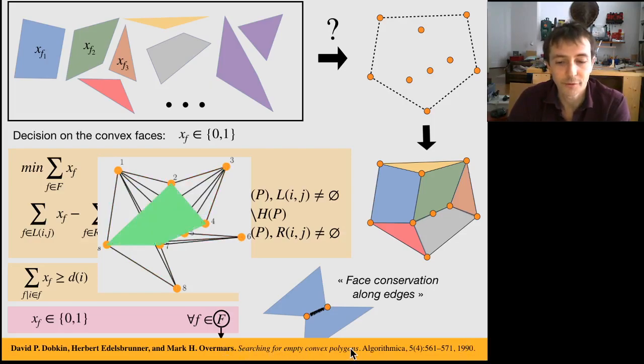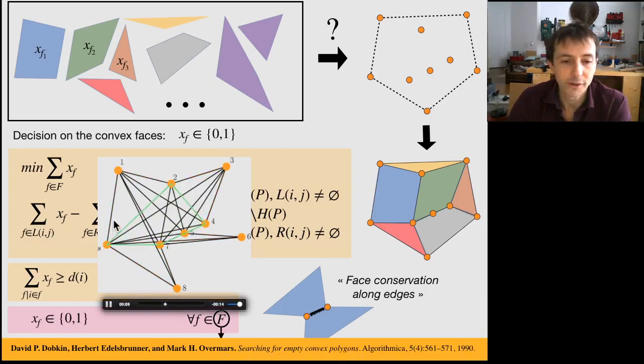from this paper searching for empty convex polygons, which enumerates chains in a so-called visibility graph and produces all possible convex faces.